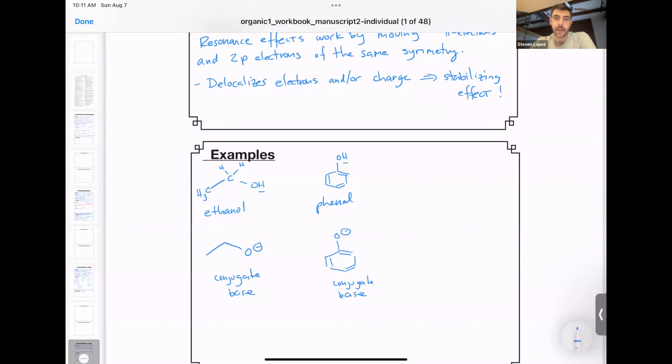First of all, the conjugate base of ethanol, ethoxide, has a negative charge on oxygen, just like the negative charge that is on phenol. The difference is that in ethoxide, this negative charge is localized on the oxygen.